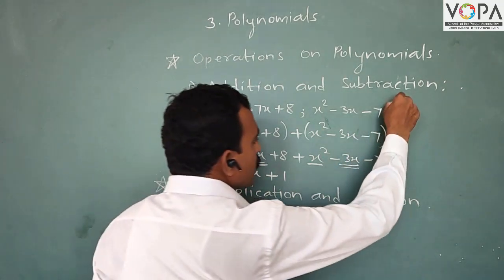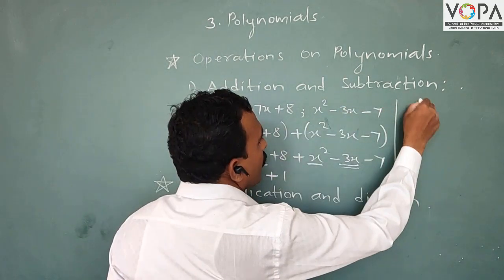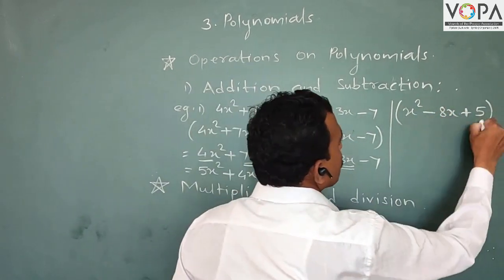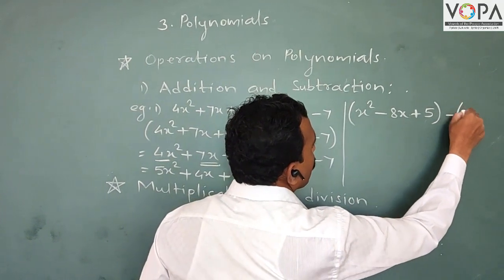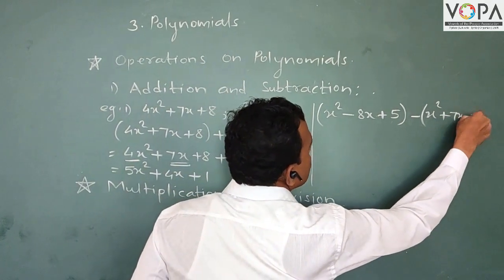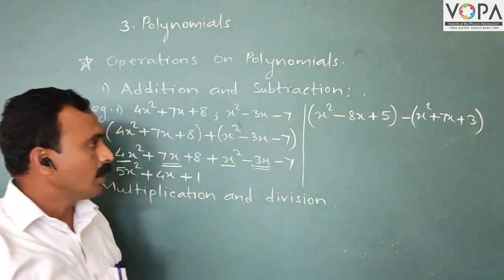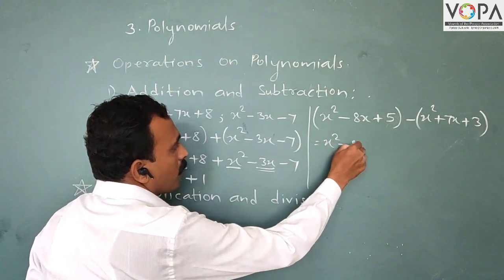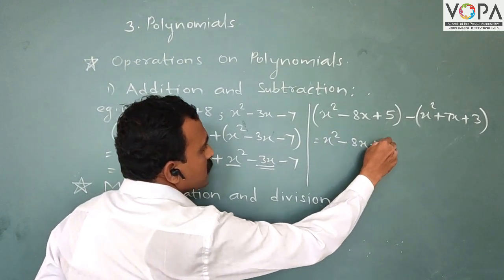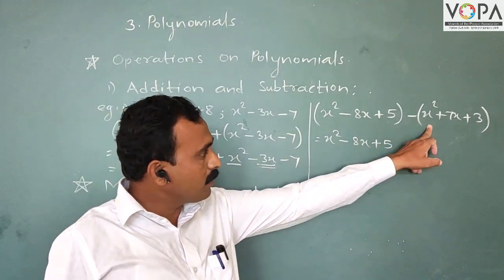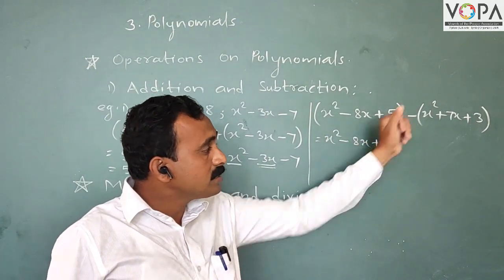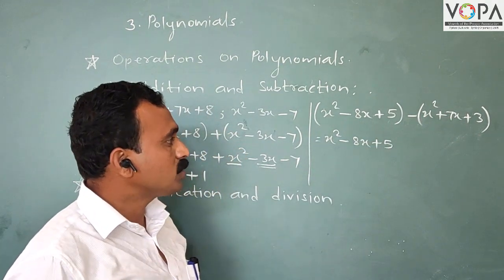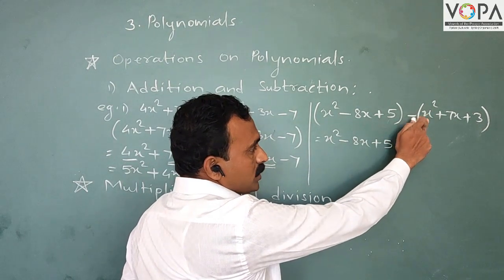Now another example of subtraction: (x² - 8x + 5) - (x² + 7x + 3). In the first step, open the bracket: the first bracket stays as it is — x² - 8x + 5. Now in the second bracket, the sign is negative. Therefore, do the opposite sign of each term of the polynomial.